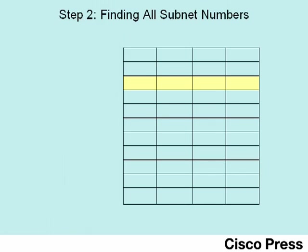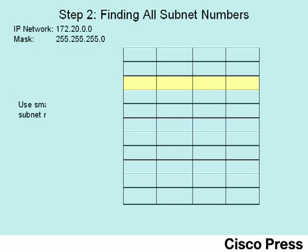Next let's take a look at scenario step two, in which we will determine all the subnets of a particular Class B network and then choose five subnets to use for this topology. The network manager has told us we're going to use Class B network 172.20 with mask 255.255.255.0, and that we should use the smallest numeric subnet numbers to support the network we're deploying.